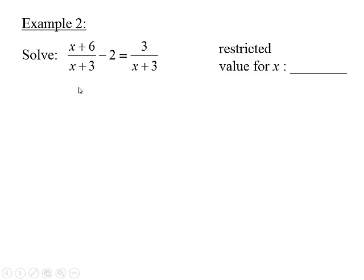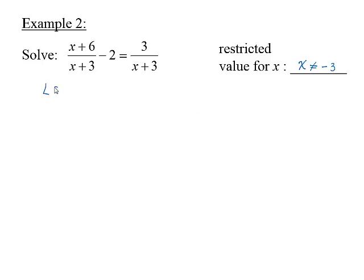Our second example is to solve the equation (x + 6)/(x + 3) minus 2 equals 3/(x + 3). The restricted value for x is that x cannot equal negative 3. The LCD is just x plus 3.